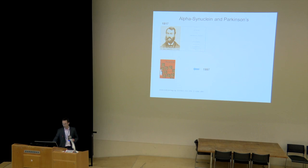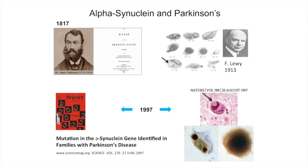First, in 1997, it was established that a small minority of forms of Parkinson's can be caused by a mutation in a specific gene on chromosome 4, and that gene encodes alpha-synuclein. So there was a causal link between alpha-synuclein and the development of Parkinson's.